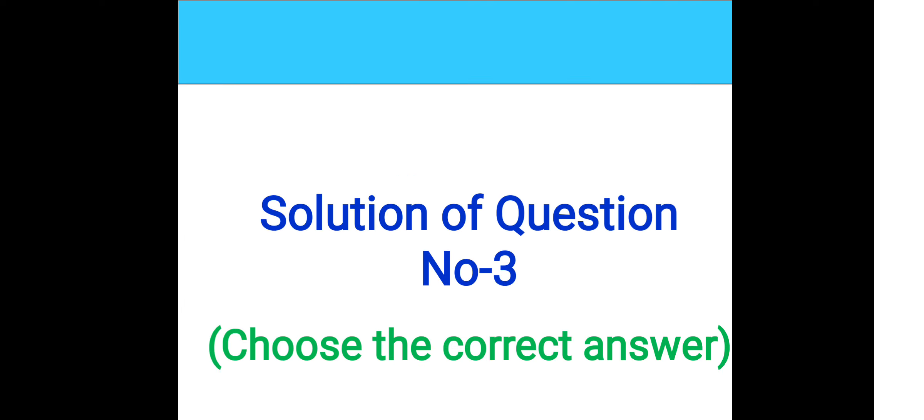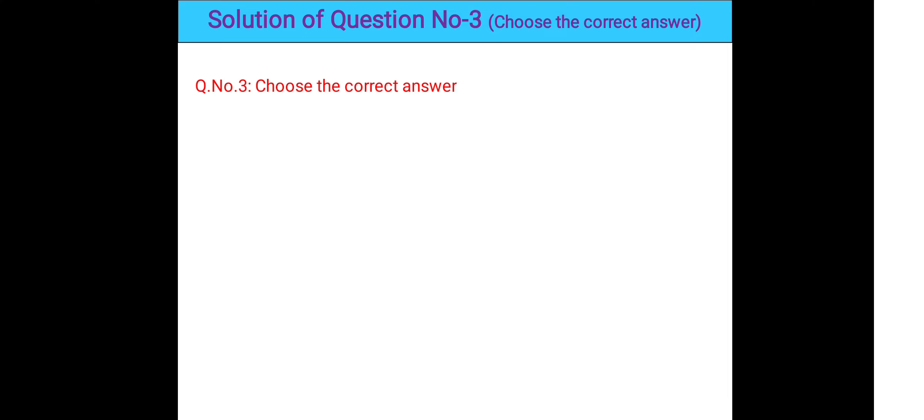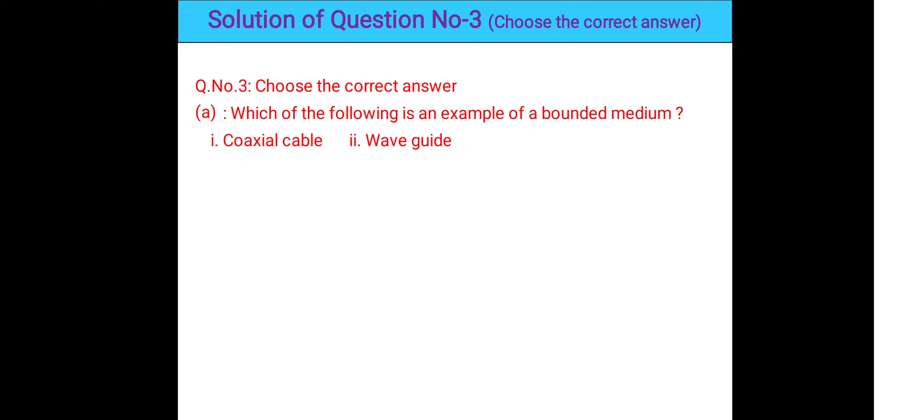Now the solutions for question number three — Choose the Correct Answer. There are ten questions. Question 3a: Which of the following is an example of a bounded medium? The options include coaxial cable, fiber optic cable, and others. The correct answer is all of the above — all cables are bounded media because signals propagate inside the wire from source to destination without going outside.